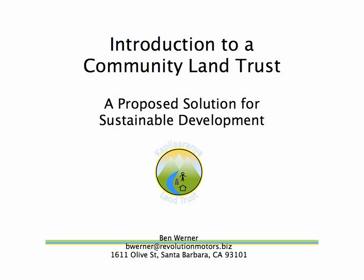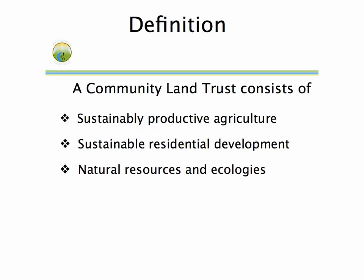The definition of community land trust, just to put it simply, is three elements: sustainably productive agriculture, sustainable residential development, and natural resources and ecologies that are a part of the landscape and a part of the natural system.